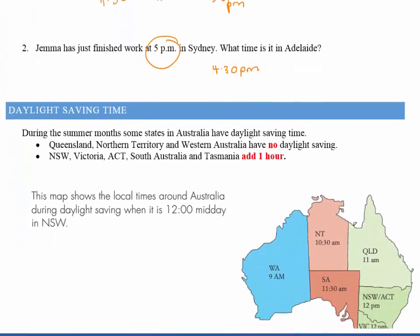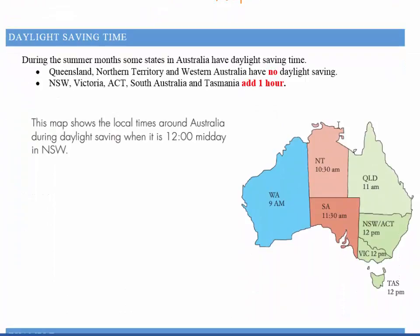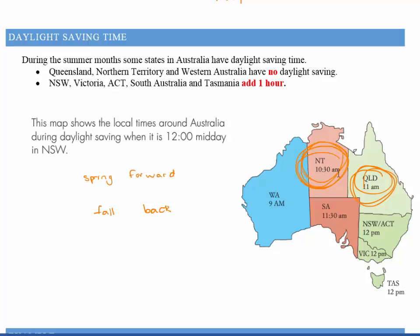Now to throw a spanner in the works, we have daylight saving. I like to think of it as: in spring the clocks go forward — you spring forward — and using the American term for autumn, fall, because you fall back. So in autumn the clocks go back. The other thing to note is that Queensland does not do daylight saving, neither does the Northern Territory, so we need to consider that when thinking about time zones — though it hasn't really come up in the HSC.